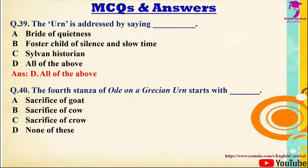Question 40: The fourth stanza of Ode on a Grecian Urn starts with — Options: A) Sacrifice of goat, B) Sacrifice of cow, C) Sacrifice of crow, D) None of these. Correct answer is B — sacrifice of cow.